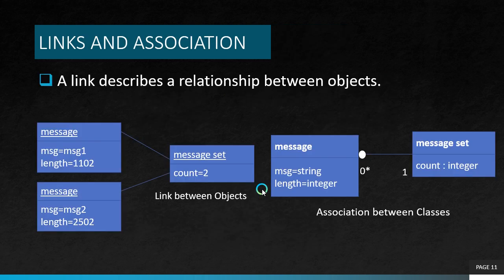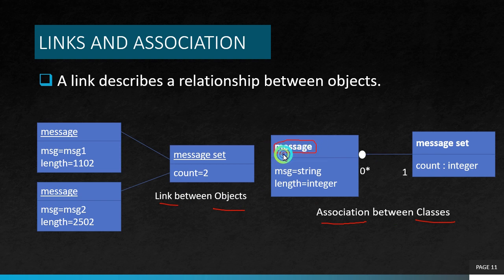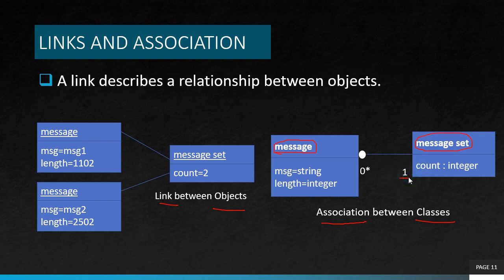So let's look about links and association. Link describes the relationship between objects. In case of classes we call it association; in case of objects we call it link. So here we have a class called message and another class called message set. Both are having their attributes and there is an association here. This line indicates there is an association between these two classes. The association is defined as 0..* and 1. The 0..* of this message class indicates that the message class can have zero or more objects — like 0, 1, 10, 100 or any number of objects. But the message set class can only have one instance of the class, that is one object only at a time.